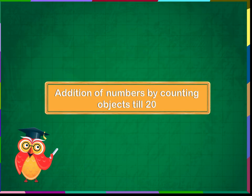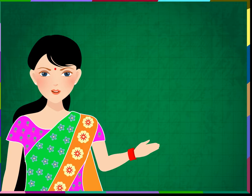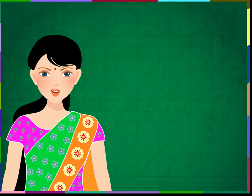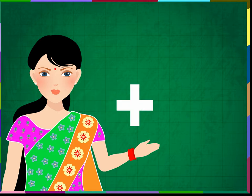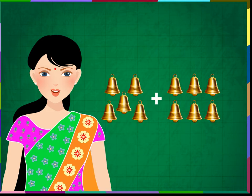Addition of numbers by counting objects till 20. We have learned in our previous lesson that addition means combining two groups of objects. When we put things together, we say we are adding things. We use the plus sign, and the combined things are called the sum.